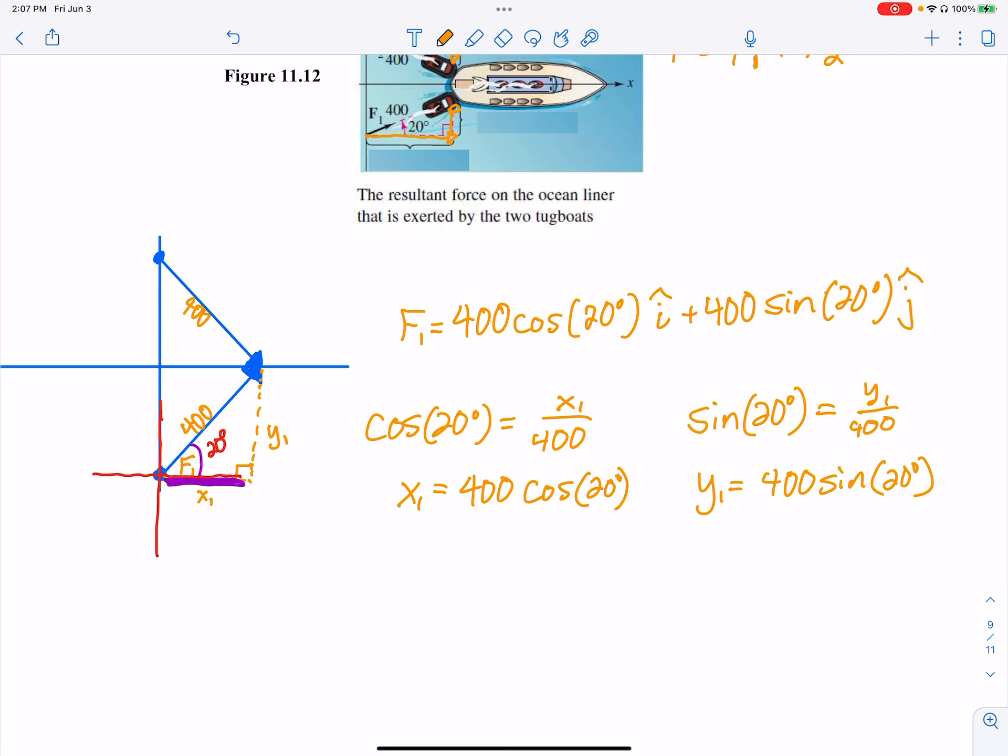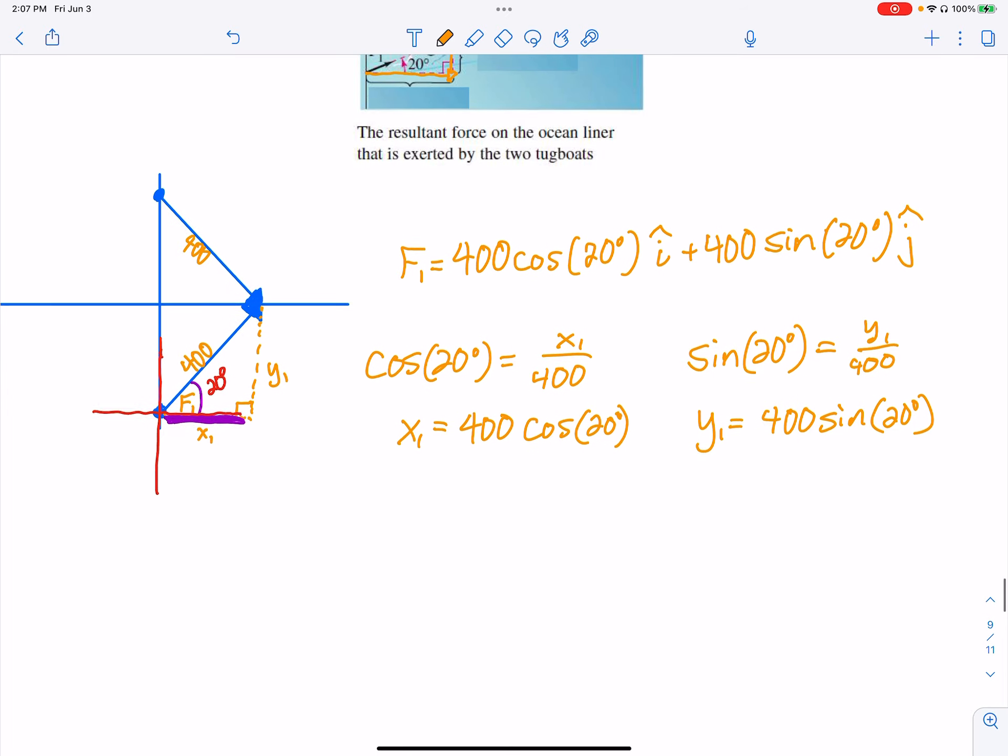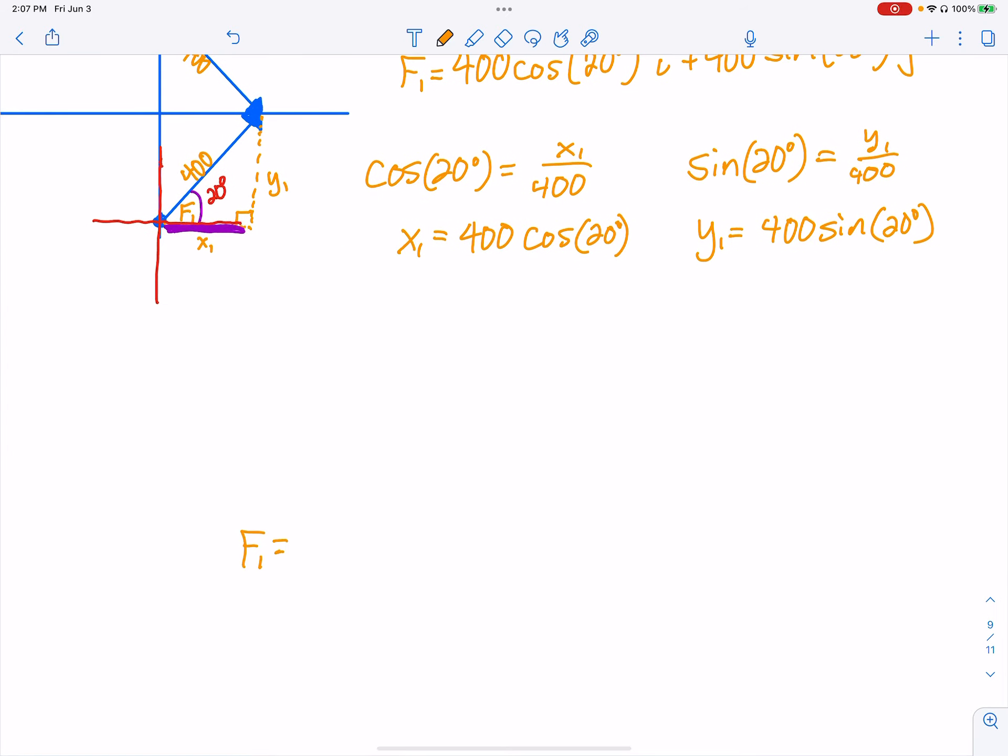Alright, I like to take these and go ahead and write it out with a decimal. Because cosine of 20 isn't on my, the 20 degrees isn't on my circle. So I like to grab these as a decimal. I'm going to write it down here, because we're going to do this again. F1 is, if I plug all that into my calculator, I got 375.877. I round out quite a bit, 3 or 4 usually. Plus 136.808 J. That's F1.